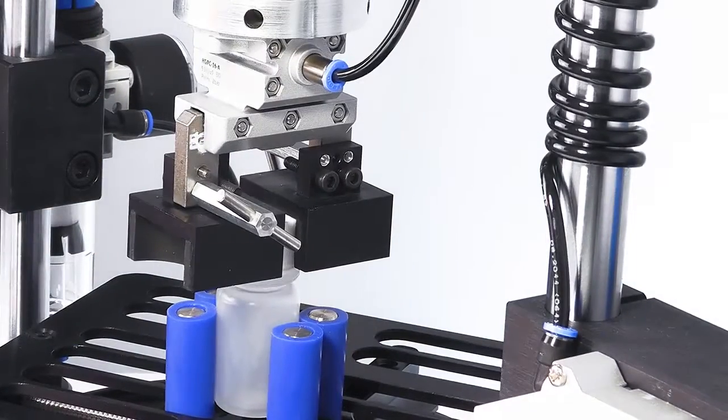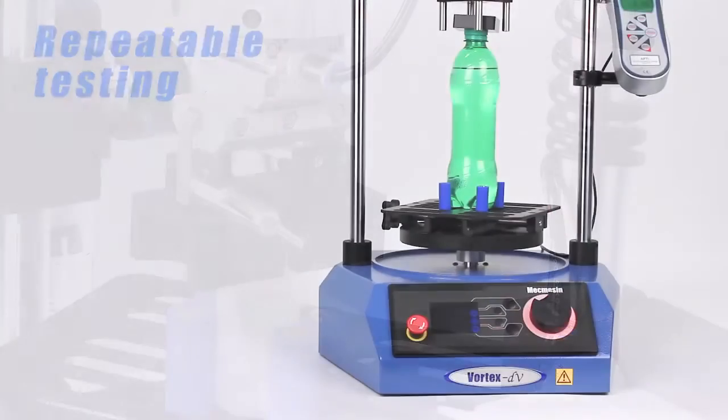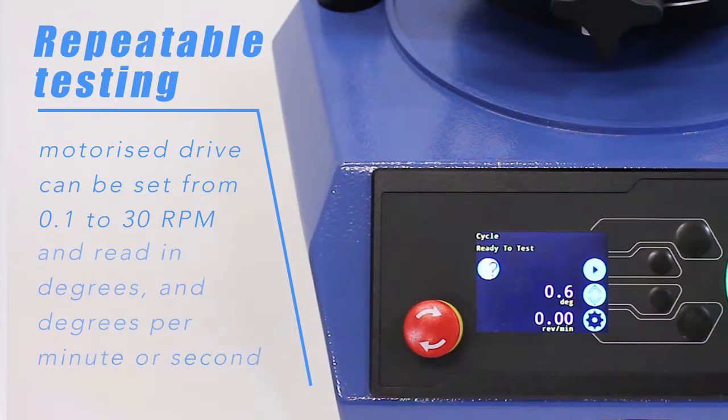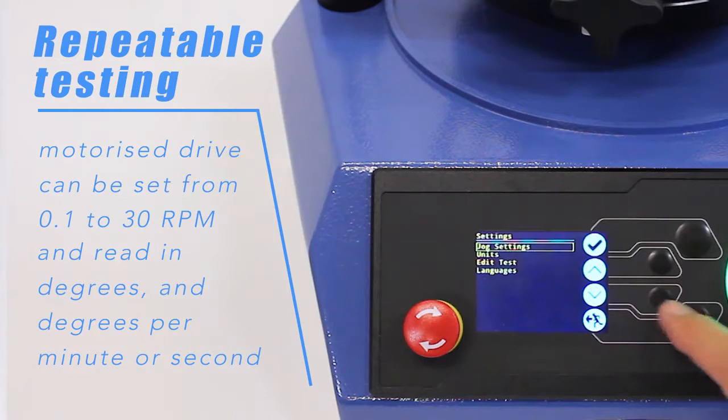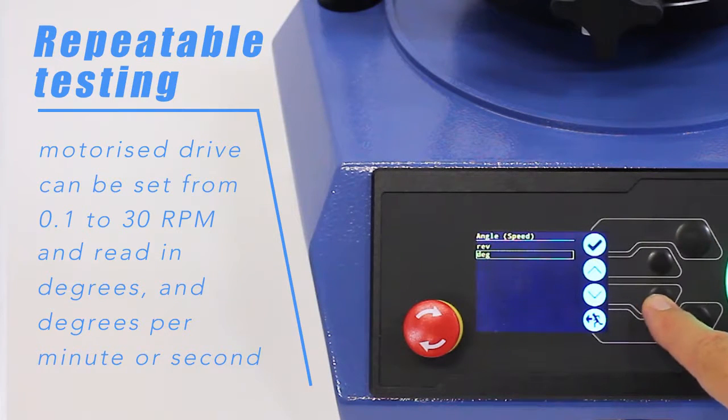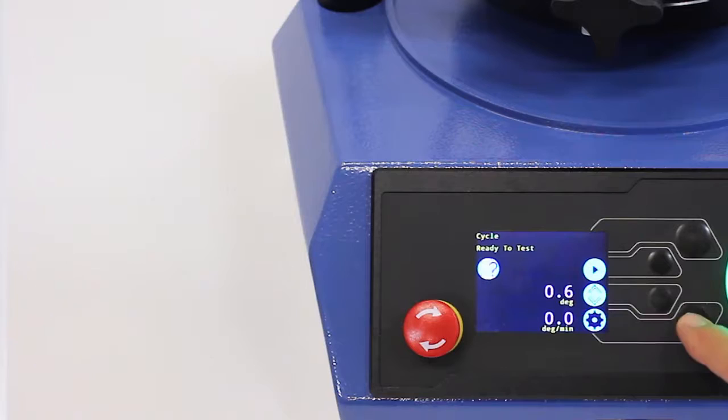To achieve repeatable results, the motorized drive rotates at a constant speed which can be set from 0.1 right up to 30 RPM. Depending on your preference, angular measurement can be reported in either revolutions or degrees. Speed may be set in either degrees or revolutions per minute or second.